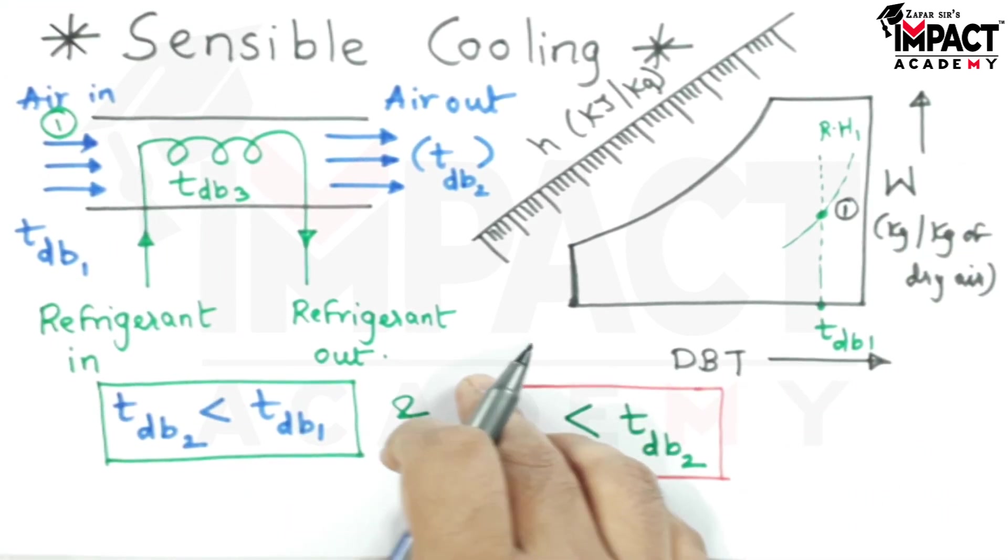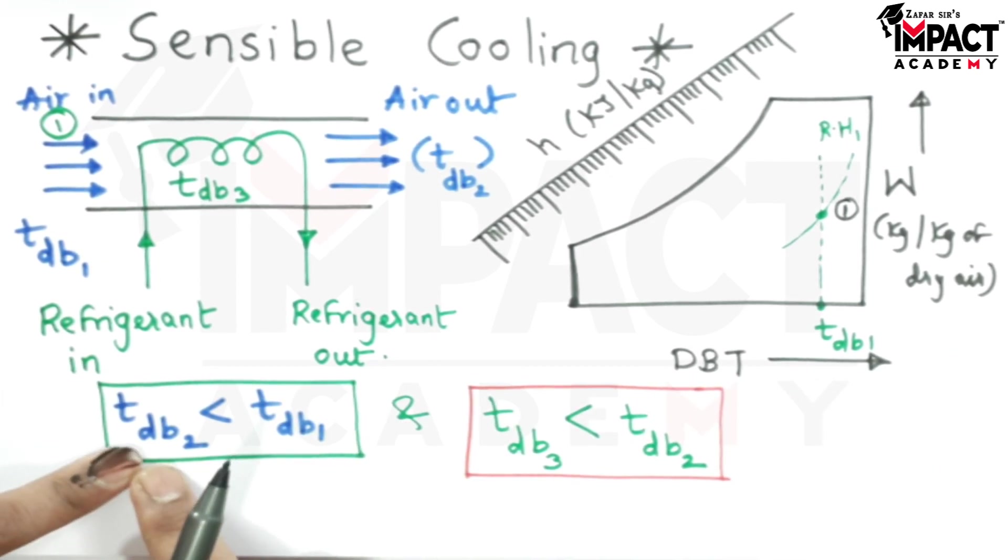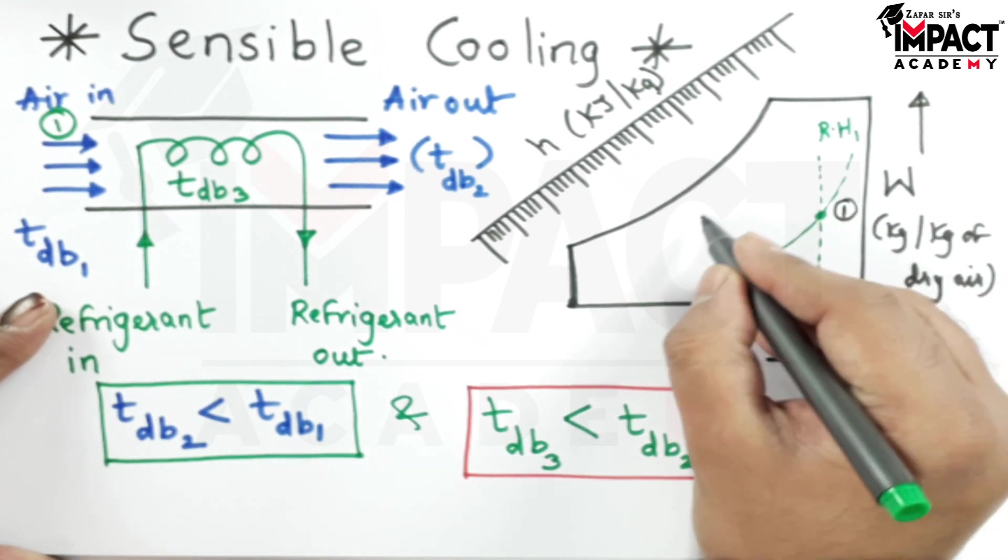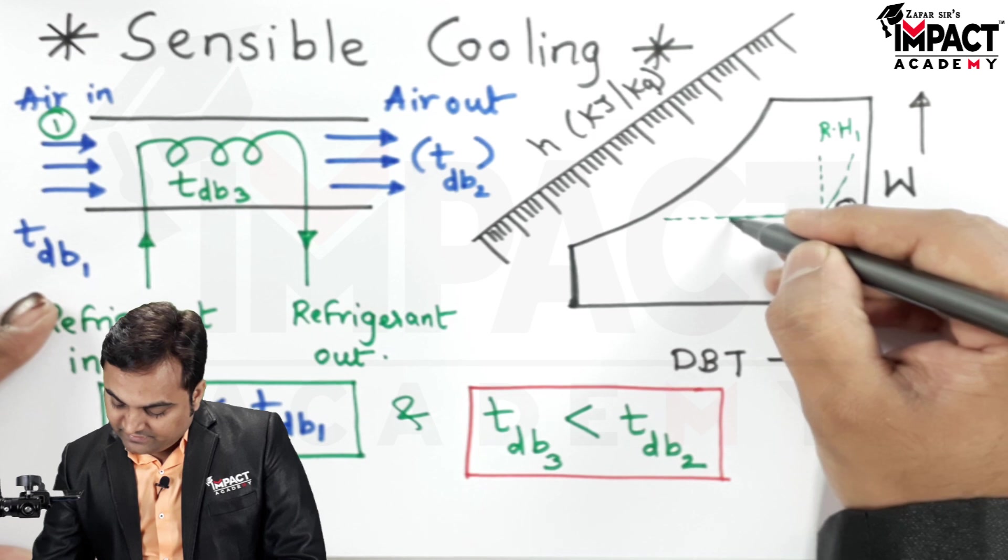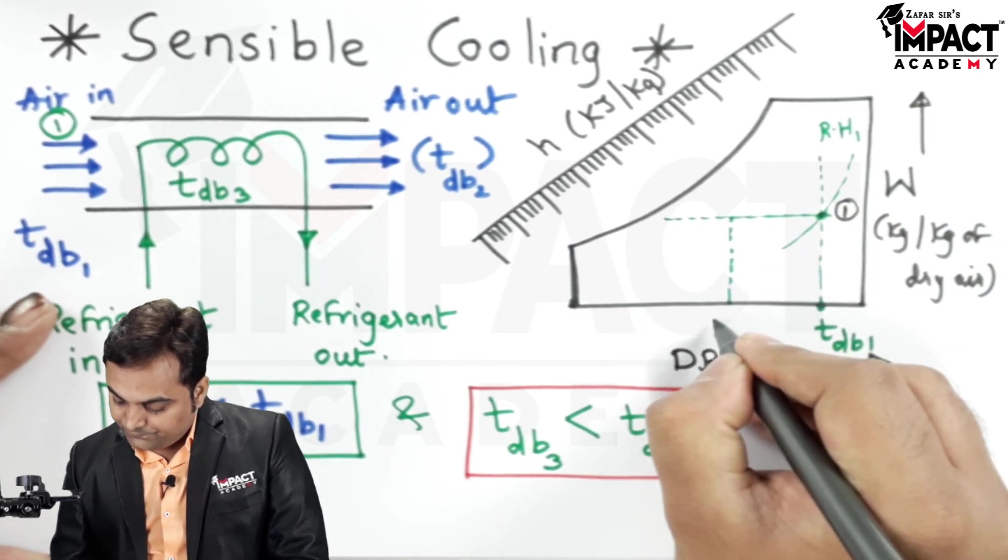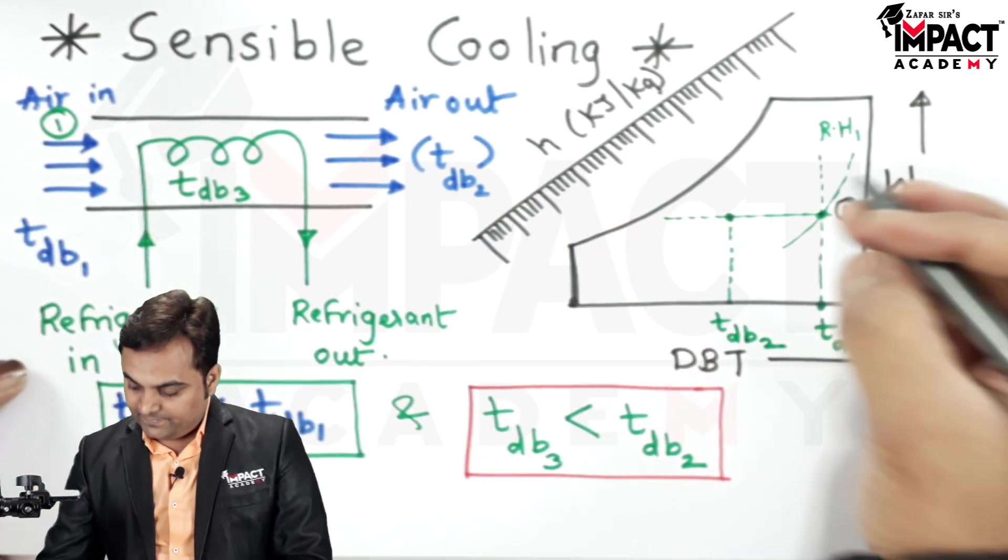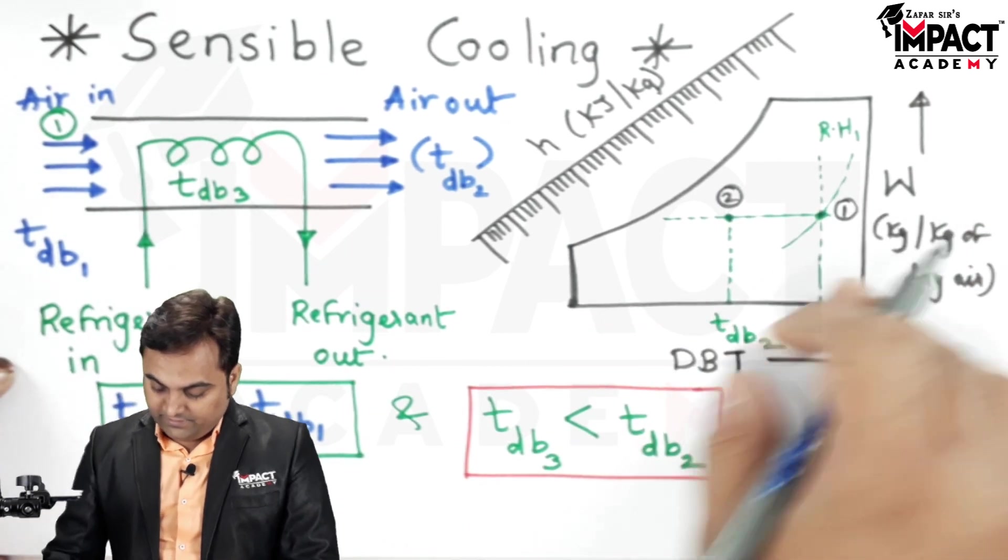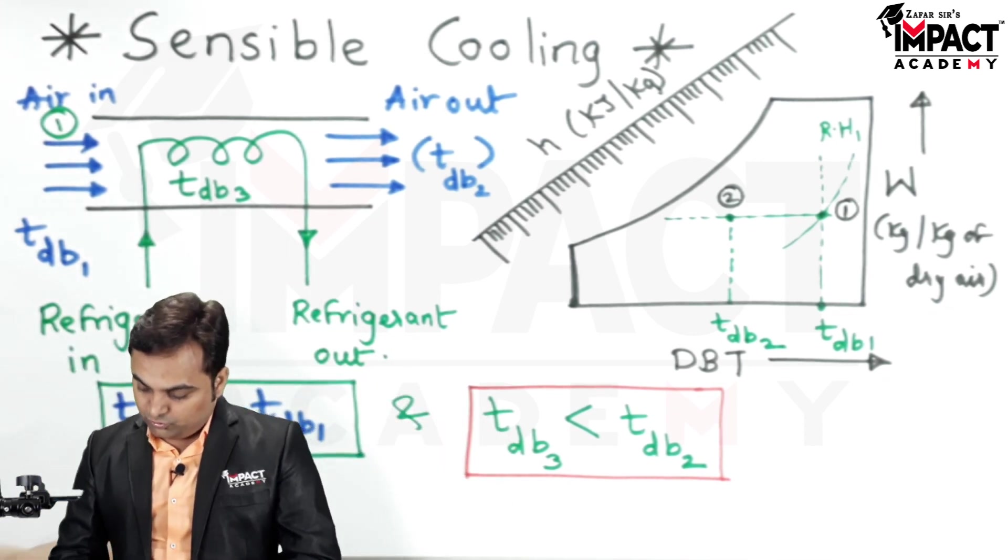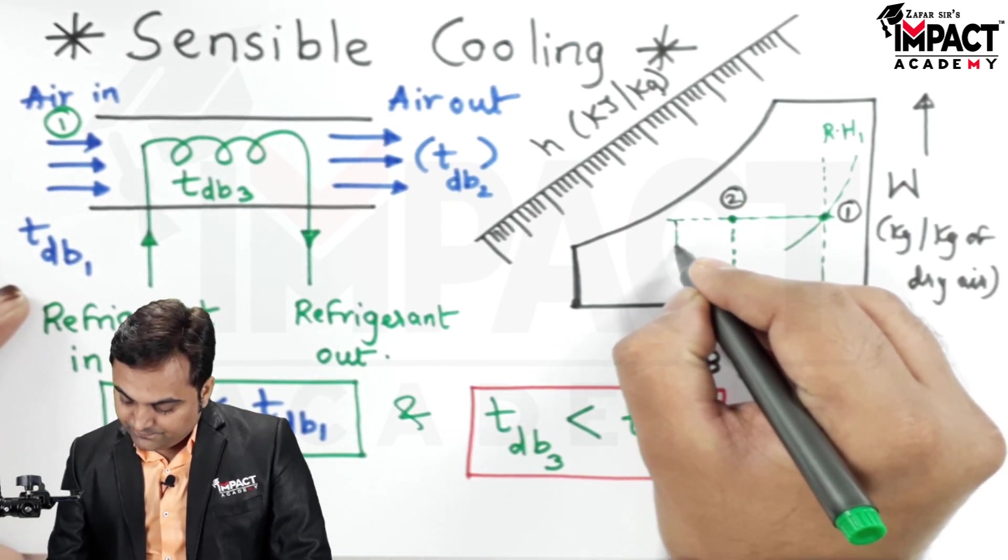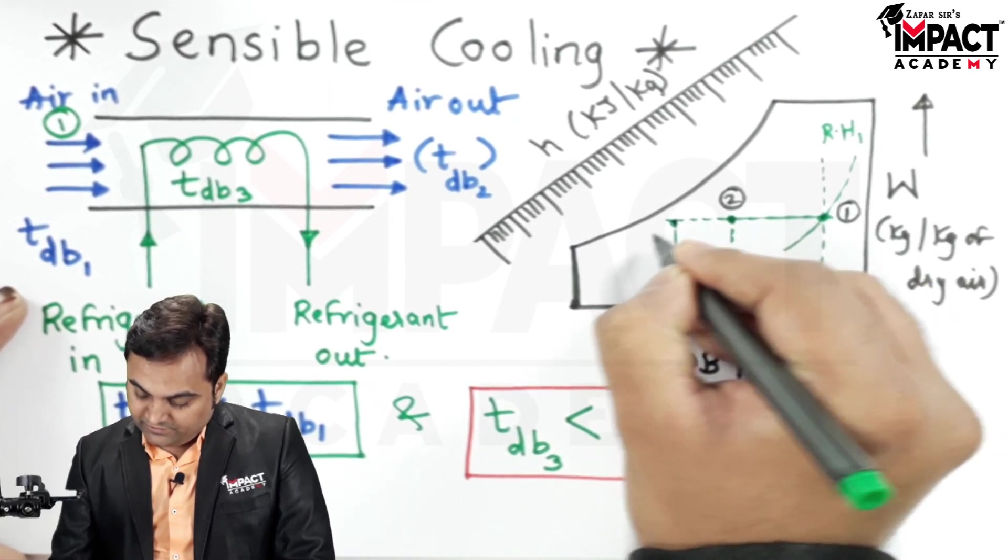Then since it is a sensible cooling process, the temperature of air should go on reducing. That is, dry bulb temperature 2 is less than dry bulb temperature 1, so just follow the horizontal line. And suppose I am taking an example that here we have dry bulb temperature 2, tdb2, and this is point number 2 for the outgoing air. Then the temperature of the coil is the minimum in the process, so I am going to plot tdb3 for the coil temperature. This will indicate point number 3.